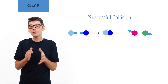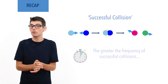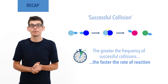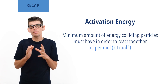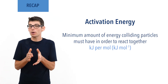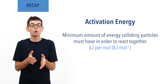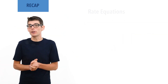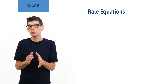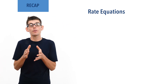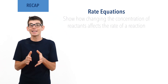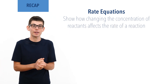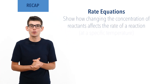The greater the frequency of these successful collisions occurring during a reaction, the faster its rate. Activation energy refers to the minimum amount of energy that particles must collide with in order for a reaction to occur. Rate equations show how changing the concentrations of reactants affects the rate of a reaction, and allow us to calculate the rate of a reaction based on the concentrations of reactants at a specific temperature.